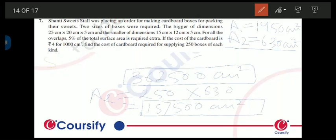5% means 5 divided by 100 multiplied by 3,62,500. So यह हमारा आएगा 18,125.